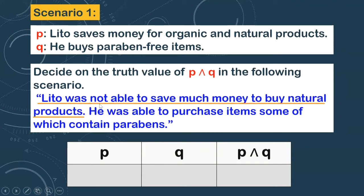Let's have the first sentence of the scenario: 'Lito was not able to save much money to buy natural products.' So Lito was not able to save enough money to buy natural products. Obviously, the event stated in proposition P did not happen. So therefore, the truth value of P here is false.